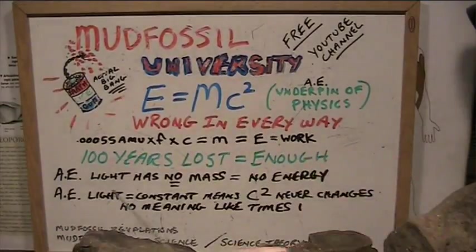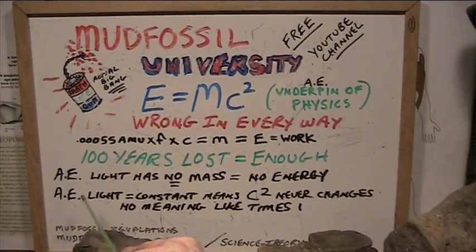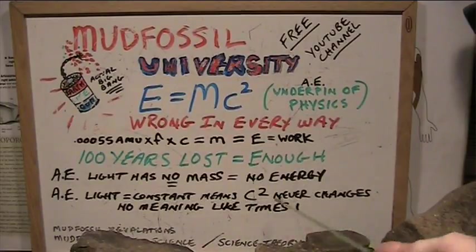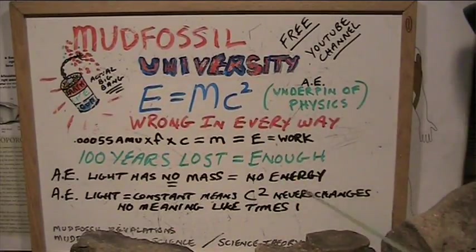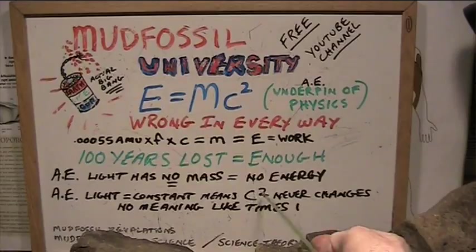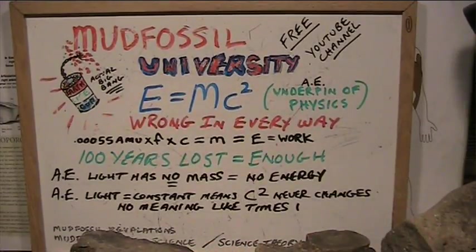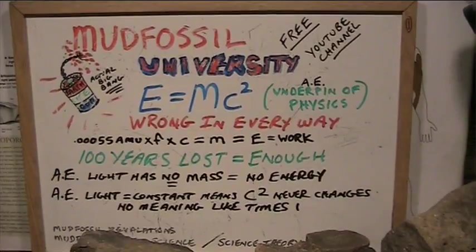C squared is meaningless because he said, Albert Einstein said light has a constant speed of 186,000 miles a second, which means it never ever changes, he said. So C squared never changes, which means it's absolutely meaningless. It's like saying times 1. It has no effect on the outcome of various different equations.